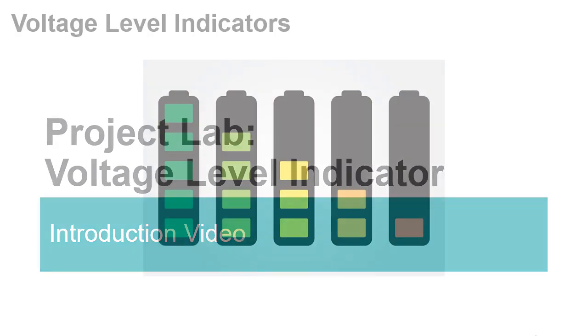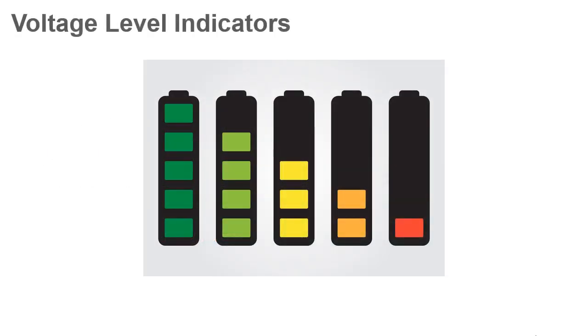Voltage level indicators depict visually how much voltage is coming from a source. They have many applications. For example, since batteries lose voltage over time, an indicator circuit is helpful for showing if a battery's voltage has decreased too much from its intended value.